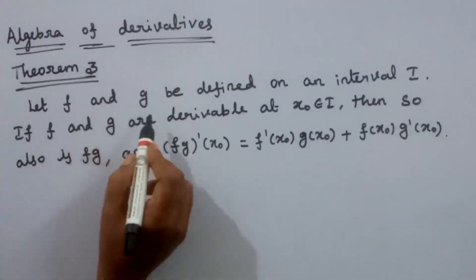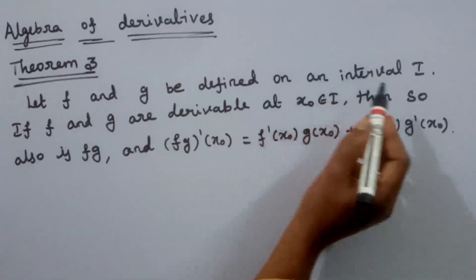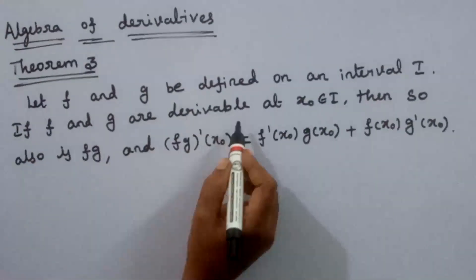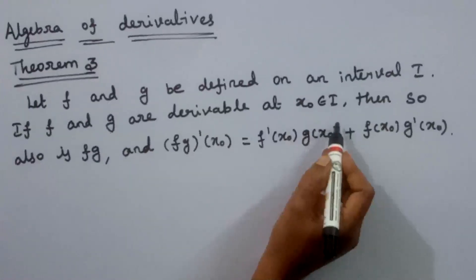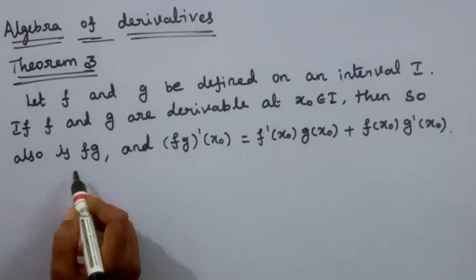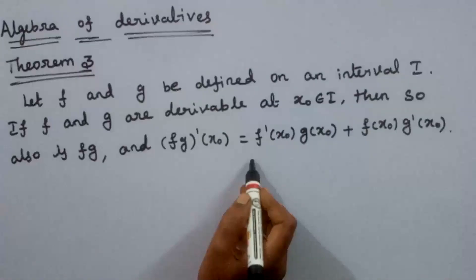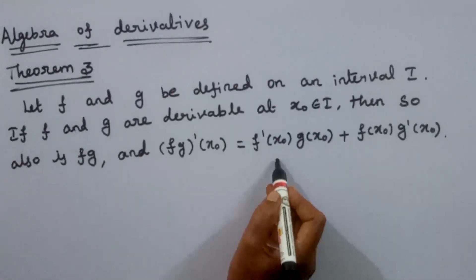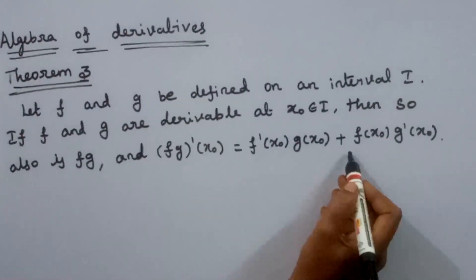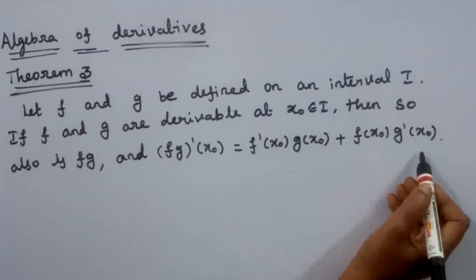Let f and g be defined on an interval I. If f and g are derivable at x0 belonging to I, then so also is fg, and fg dash of x0 is equal to f dash of x0 into g of x0 plus f of x0 into g dash of x0.